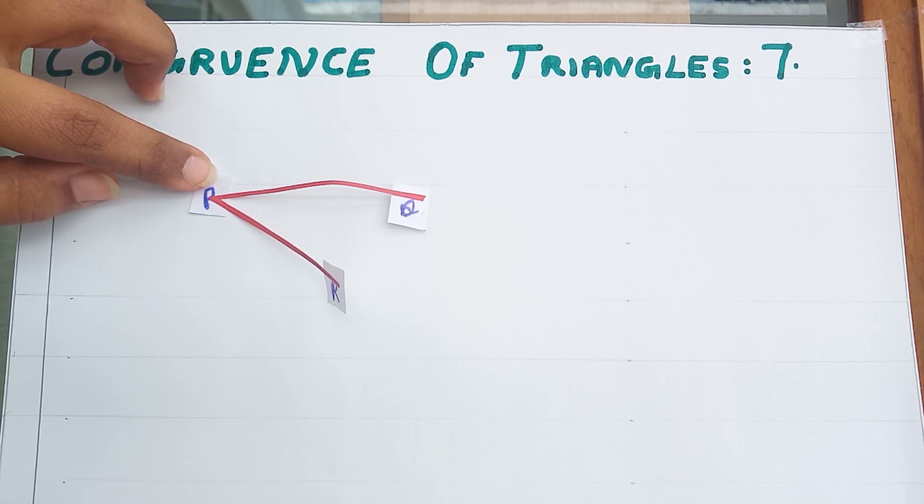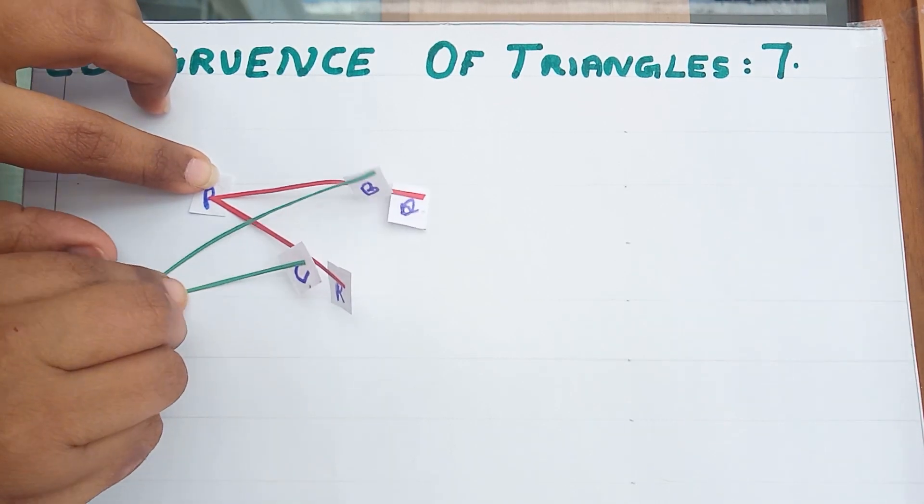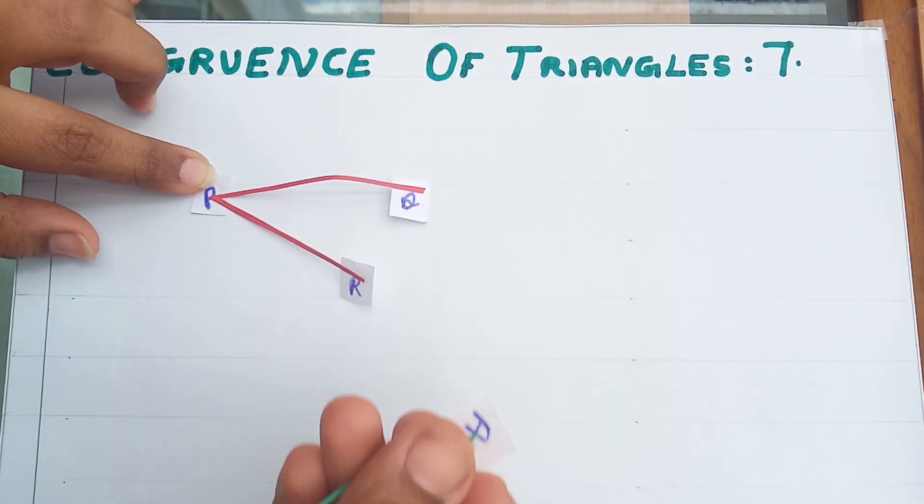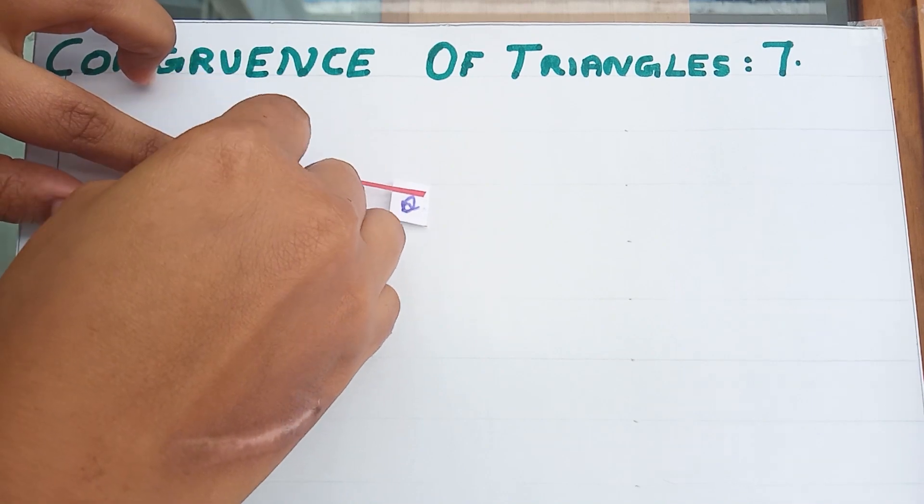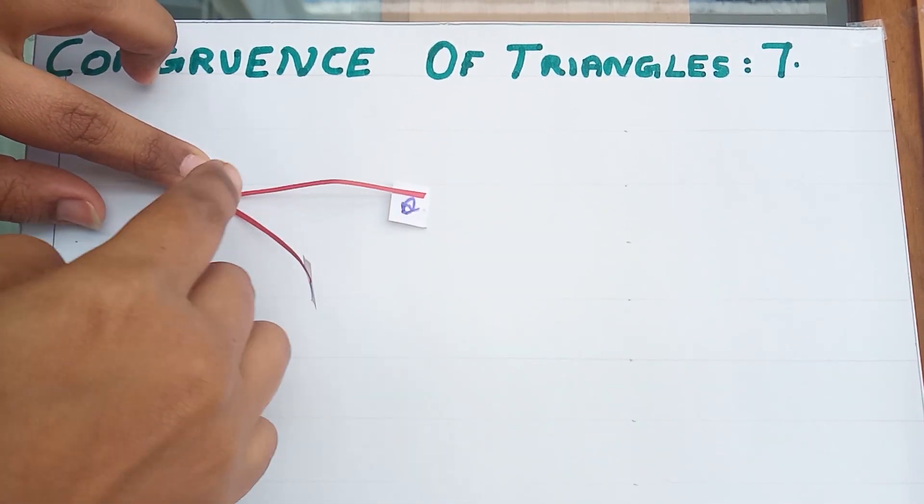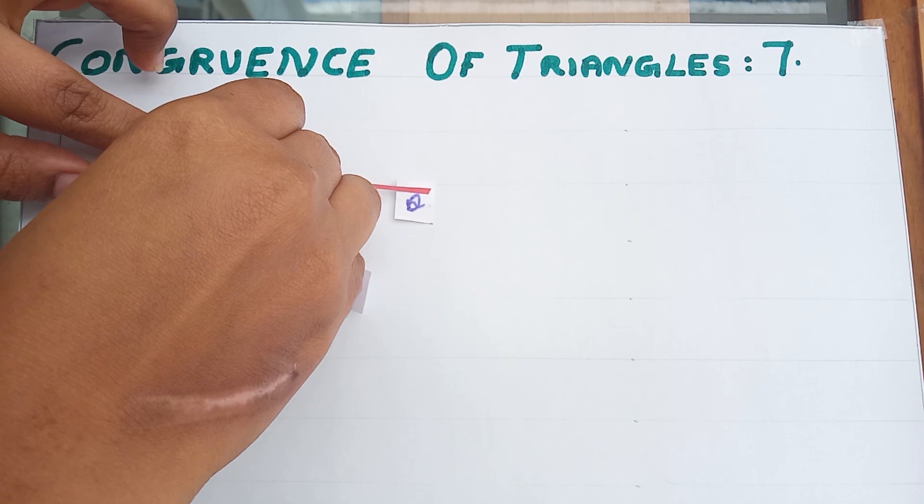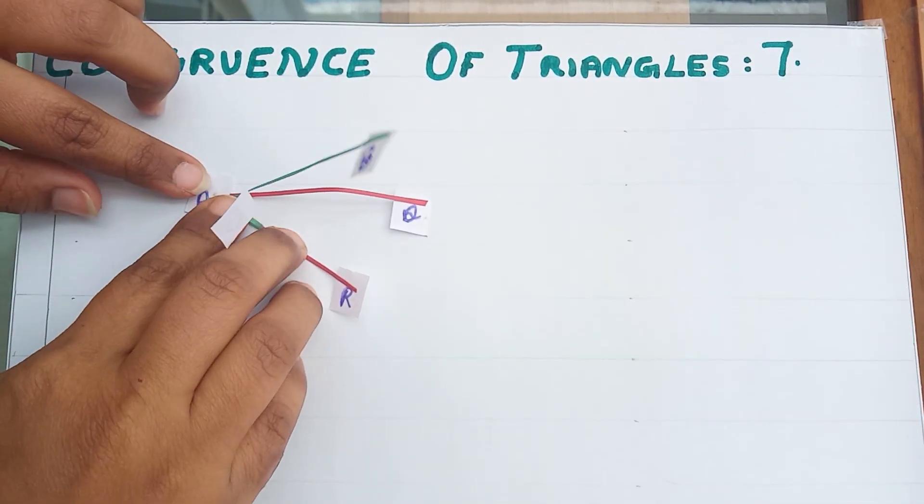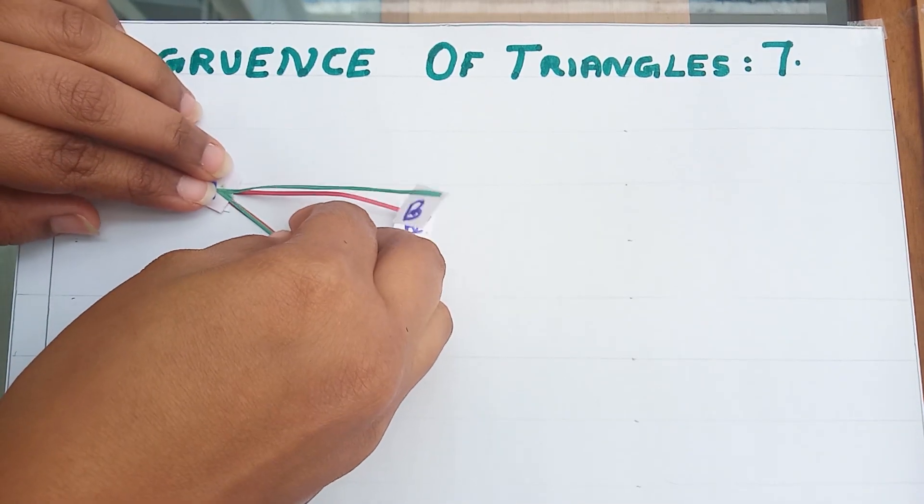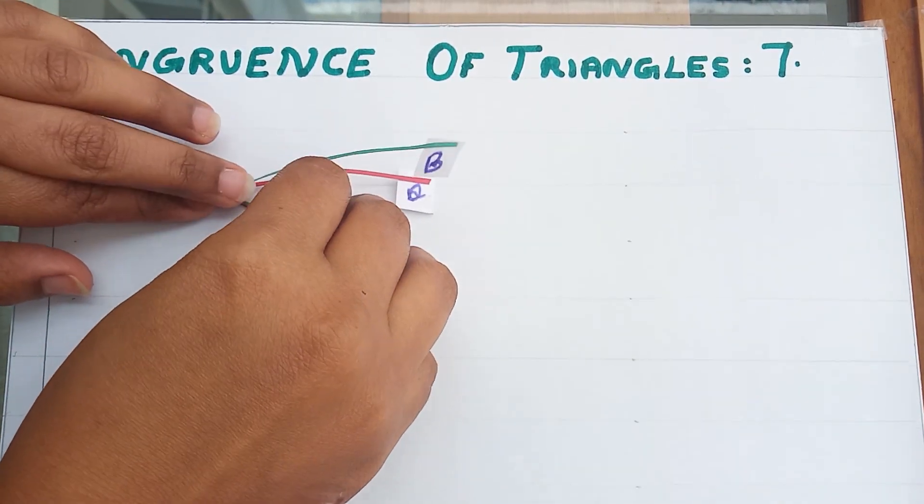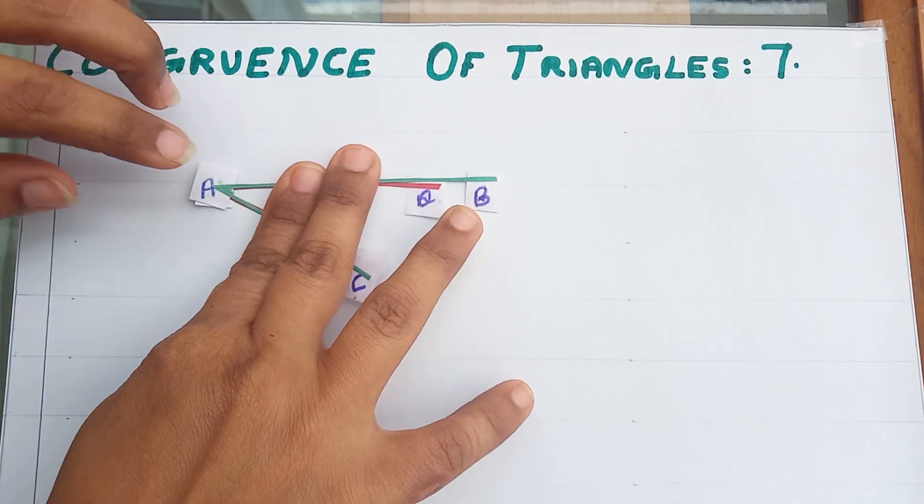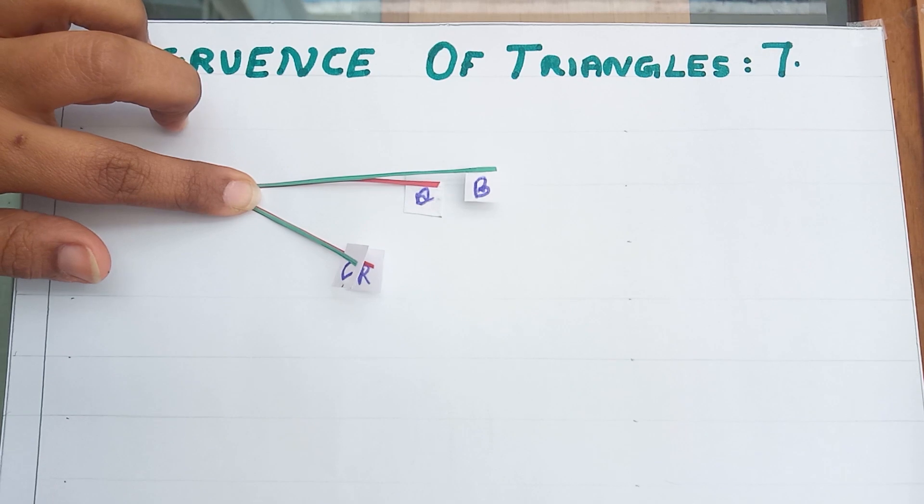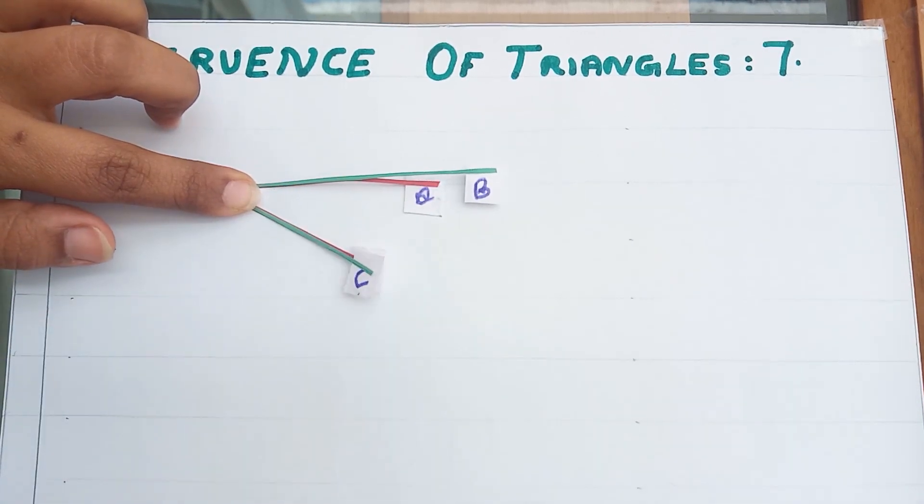To know whether these two angles are congruent or not I have to keep one angle over the other. So the vertex P and vertex A join together. And I am going to check whether these arms are coinciding or not. See these two arms are coinciding. So I can say that these two angles are congruent.